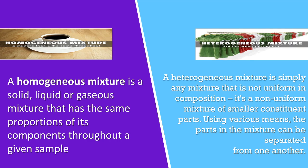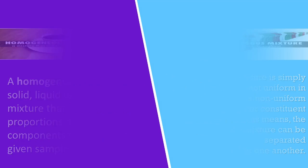A heterogeneous mixture is simply any mixture that is not uniform in composition. It's a non-uniform mixture of smaller constituent parts. Using various means, the parts in the mixture can be separated from one another.